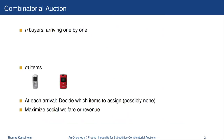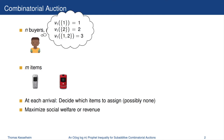The setting we are considering is as follows. We have N buyers arriving one by one and we have M items. At each arrival we have to decide which of these items to assign — possibly none — and we either want to maximize social welfare or revenue. For example, we might have two items and the first buyer has a value of 1 for the first item, a value of 2 for the second item, and a value of 3 for both items together. Let's not give him any item.